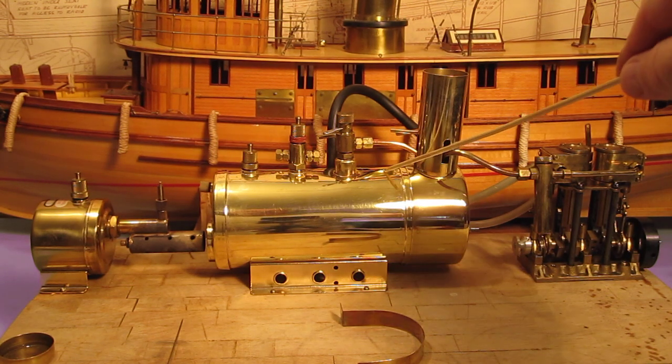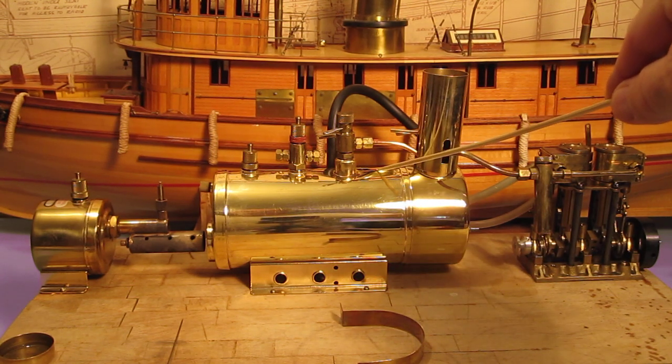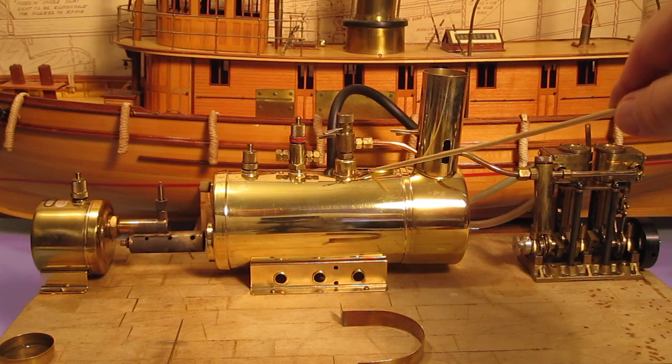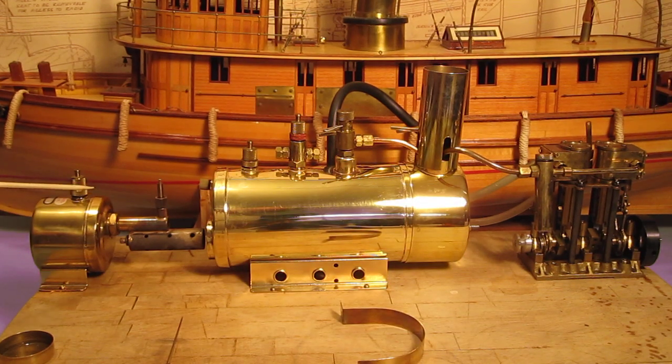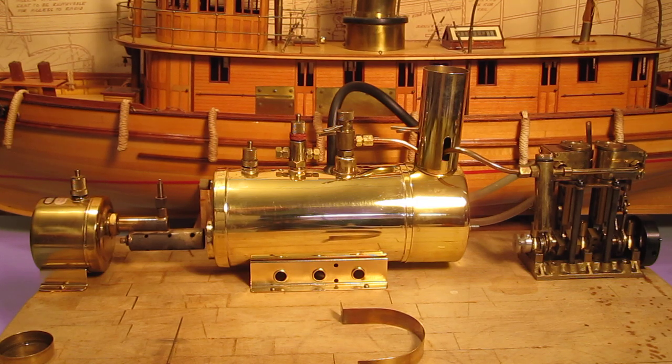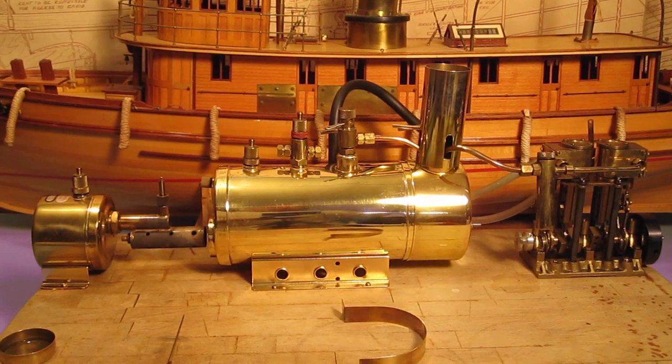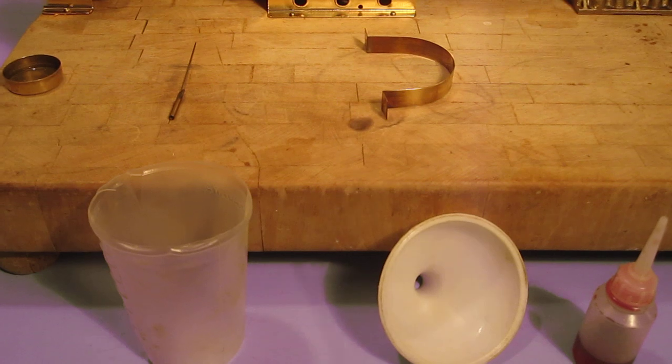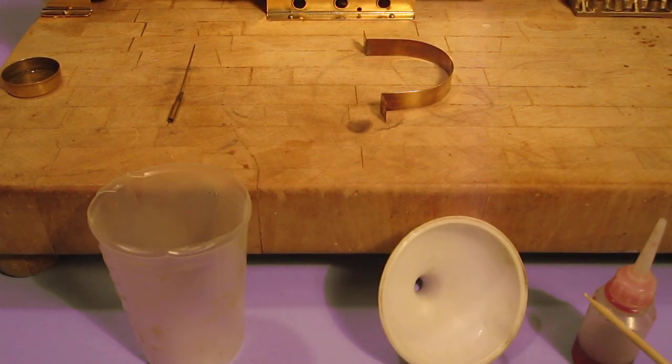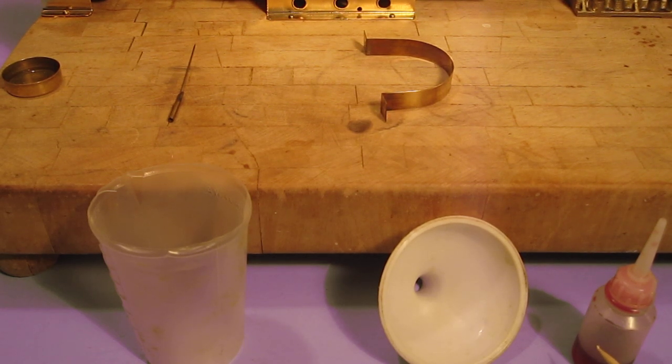Over here we have the B2F boiler, and here is the burner that goes with the engine. A couple of other things that came with this engine were a measuring cup, funnel. This is to put your steam oil in that lubricates the pistons in the engine.